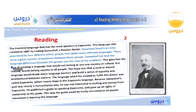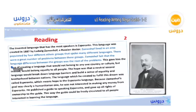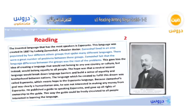The invented language that has the most speakers is Esperanto. This language was created in 1887 by Ludwig Zamenhof, a Russian doctor. Zamenhof lived in an area populated by four different ethnic groups that spoke many different languages. There were a great number of problems between these groups. Zamenhof felt that the language difference between the groups was the root of the problems.